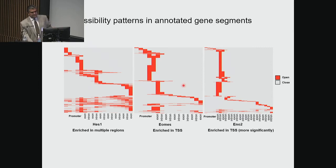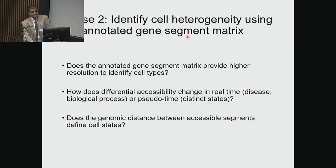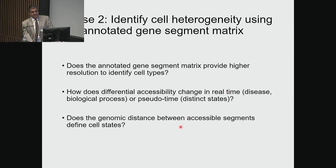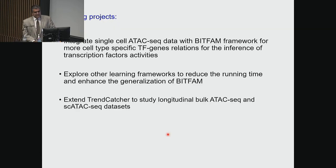We want to now use this approach with new machine learning or deep learning approaches to learn identities of cells with this better resolution. Can we identify cell heterogeneity with this annotated gene segment matrix — where we annotate coding and non-coding regions? Do we think this annotation approach helps identify distinct cell types so that we don't just have a binary approach of accessible versus not accessible, but accessible where? Will this help us track real-time changes or pseudotime changes as disease progresses? Can genomic distance between accessible segments across the genome help define cell states — are there certain genes that become co-accessible or not? These are our ongoing projects.